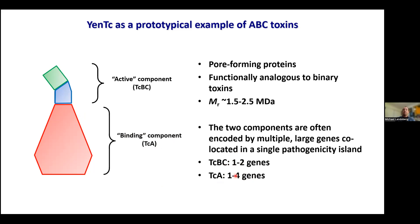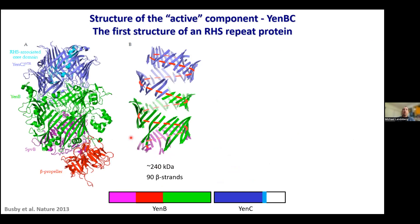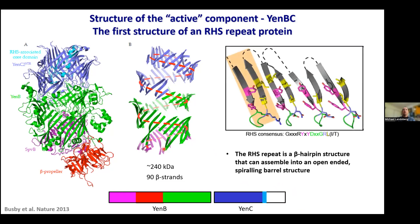Now I'll talk about the active component. We solved this structure using X-ray crystallography in collaboration with Shaun Lott's group at the University of Auckland. This is a 240 kilodalton complex — a really nice example of a cooperatively folded structure. The NB protein, colored in magenta, red, and green, forms a continuous beta spiral with the NC structure colored in blue and cyan, with no interruptions in that continuous fold going from the C-terminus of NB to the N-terminus of NC. In total there are 90 beta strands making up this spiraling beta structure, capped at one end by a beta propeller and at the other by an RHS-associated core domain shown in cyan.